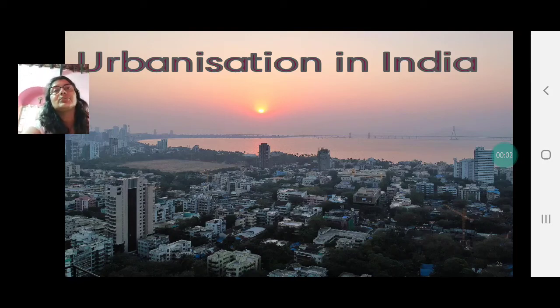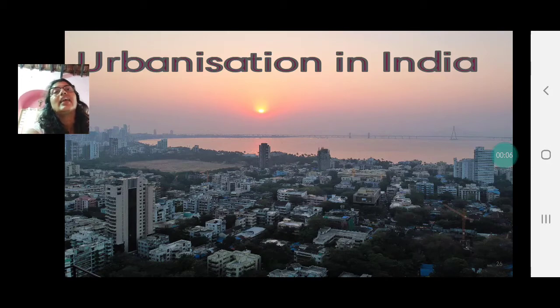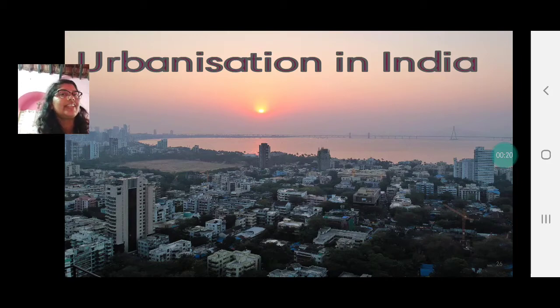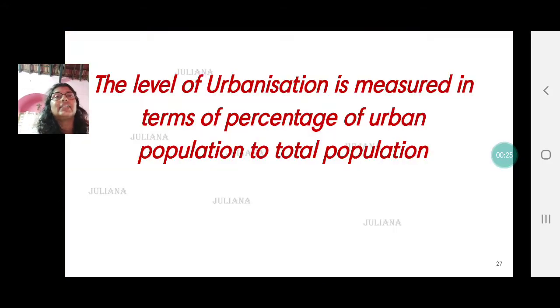Welcome back children to a third video on chapter 7 human settlements. Today we are going to discuss urbanization in India. The picture here shows you an urban area in India. Looking at the high-rise buildings, cement and concrete buildings we can gauge that it is an urban area. Let us understand what is urbanization.